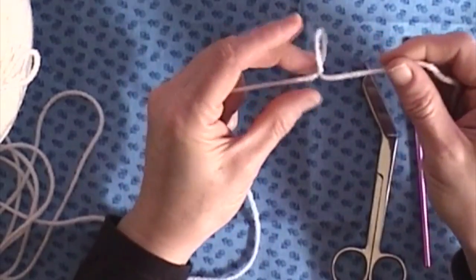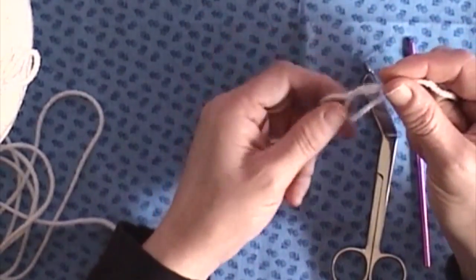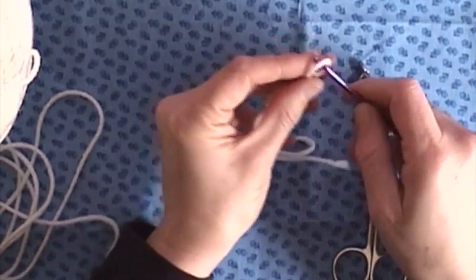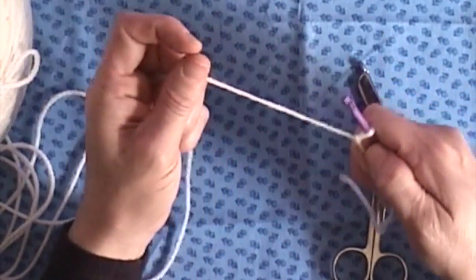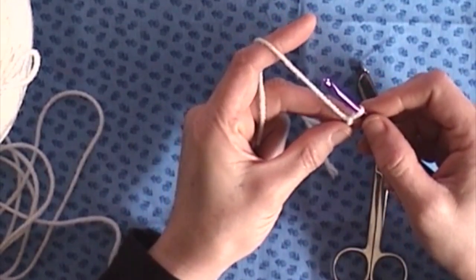To get that knot out, you simply just pull both ends and it will come out. Okay, so we'll put this on our crochet hook, and this is the beginning. I will show you how to start a chain.